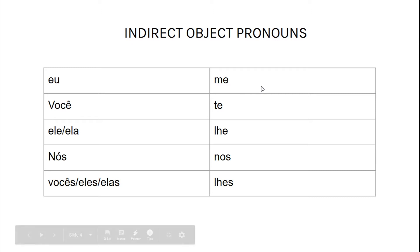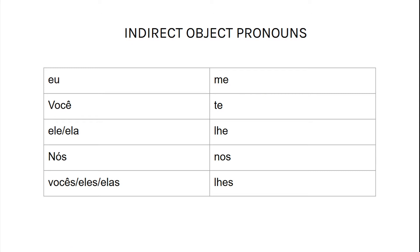I just want to make a quick comment. Indirect objects are often used with verbs that imply something being given, transferred, or done to — or for. So 'to' and 'for' are the prepositions that you could add to these verbs when they're used with these pronouns. Por exemplo, o verbo dar. Dar quer dizer 'to give.' Como o verbo dar, vamos usar a indirect object pronoun — because you give to someone.